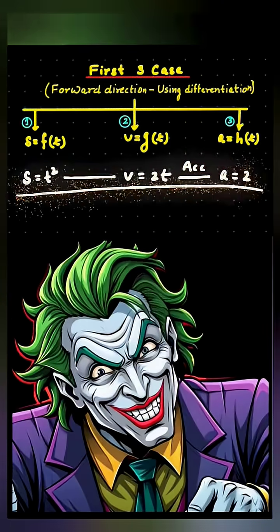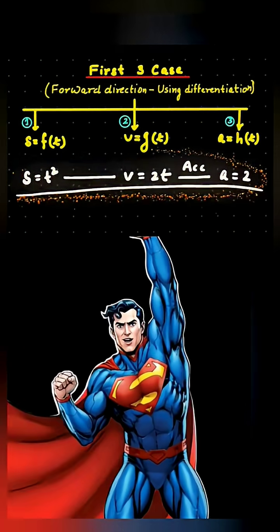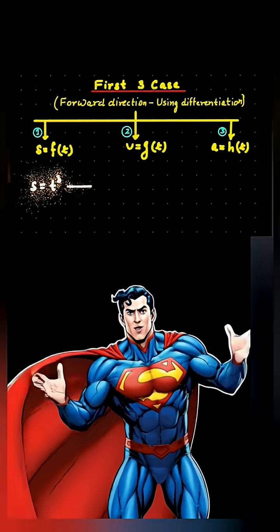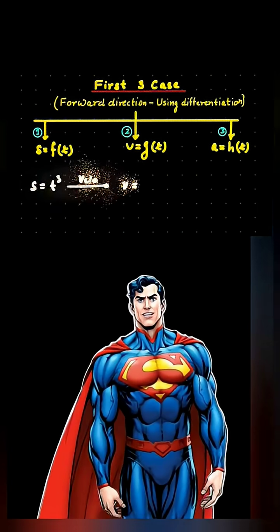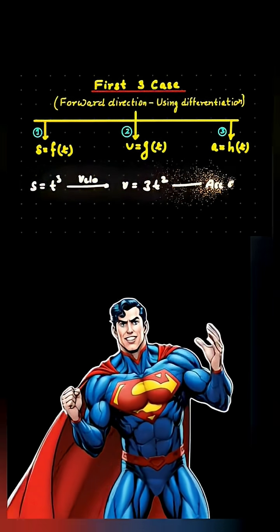That's acceleration, speed changing with time. Exactly, Joker. Differentiating T cubed once gives velocity 3T squared, and differentiating again gives acceleration 6T.